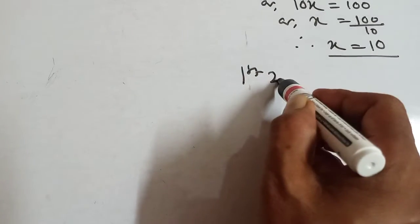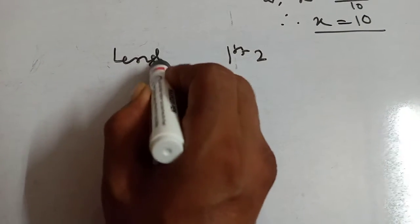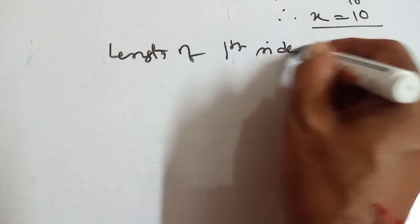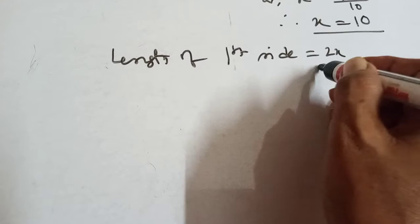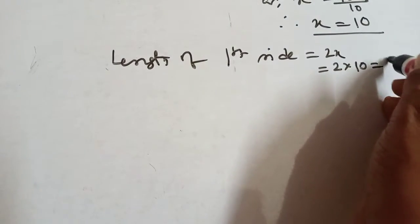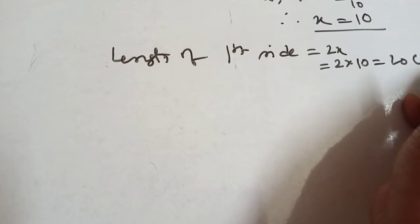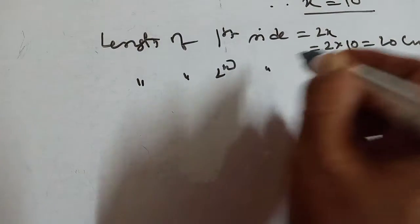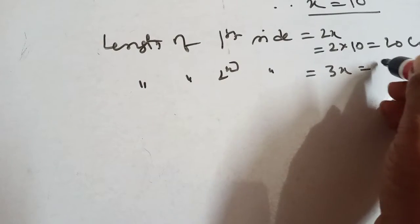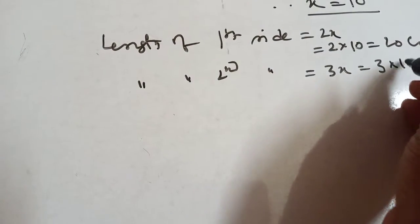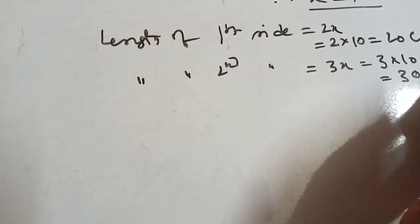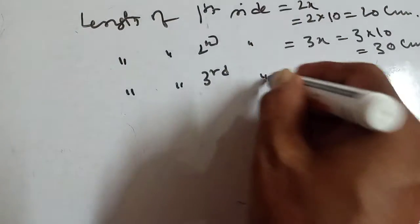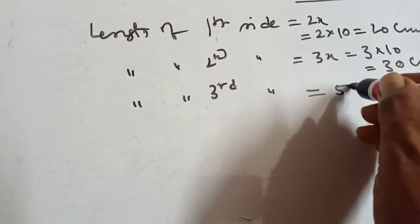Length of first side: 2x = 2 × 10 = 20 cm. Length of second side: 3x = 3 × 10 = 30 cm. Length of third side: 5x = 5 × 10 = 50 cm.